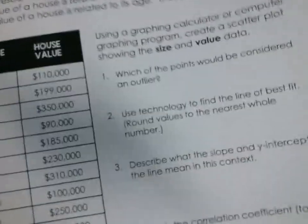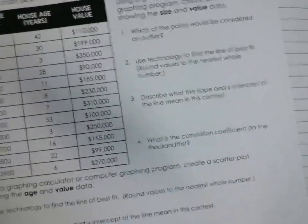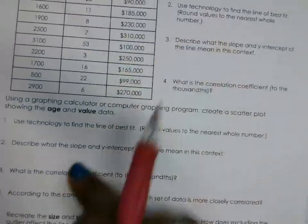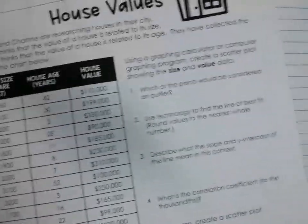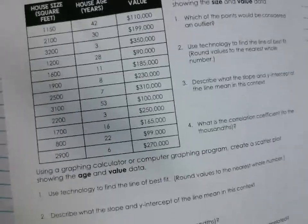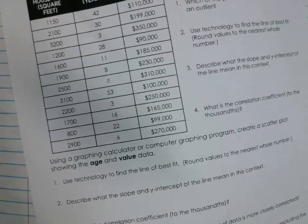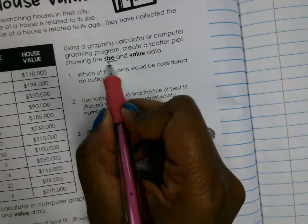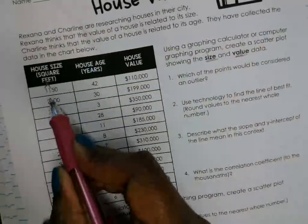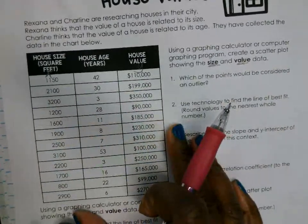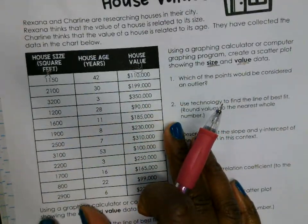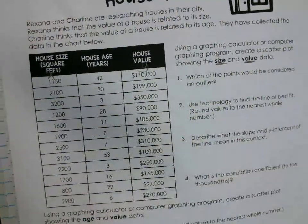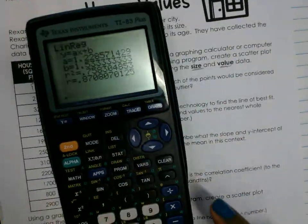For this problem, you see the house value data. I need you to use the technology to find the correlation coefficient and answer the questions. For this first one, X is your size and Y is the value of the house. Type in the size values for X and the house values for Y. After you reset the calculator — Second, Plus, 7, 1, 2 — go to Window.